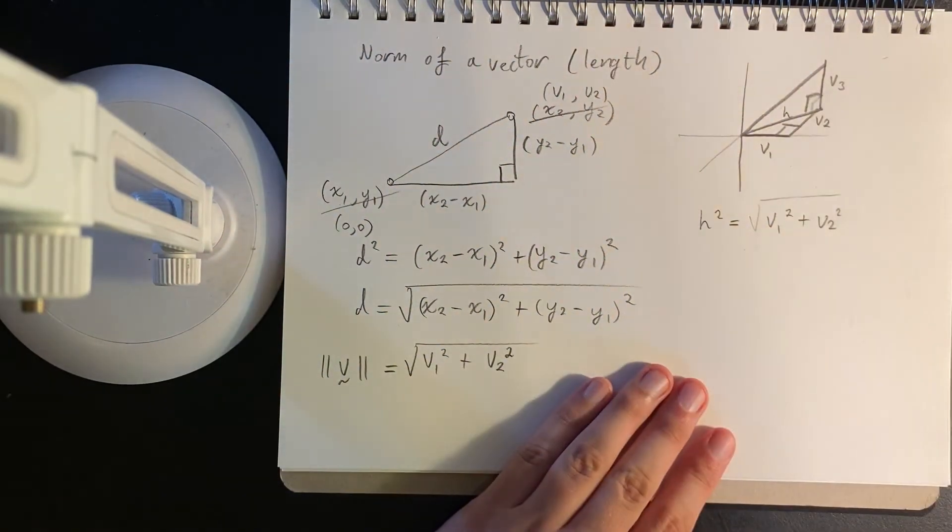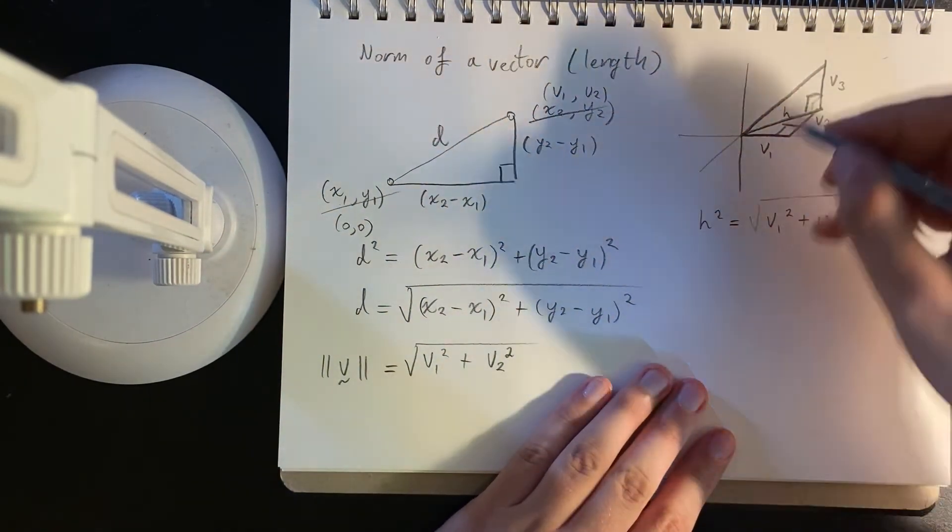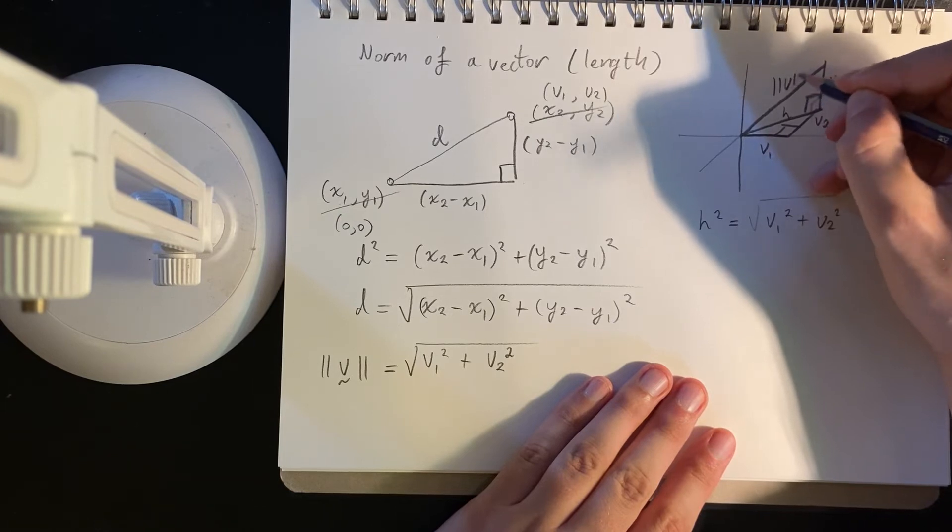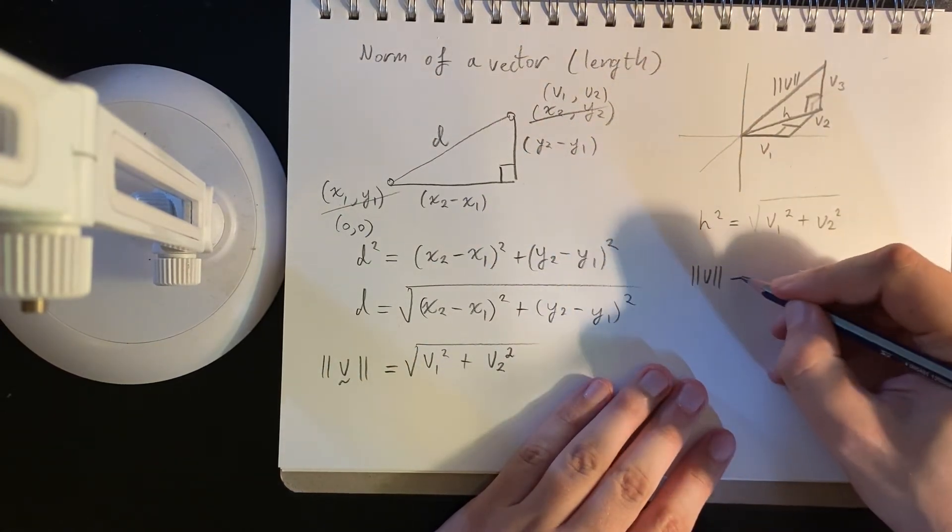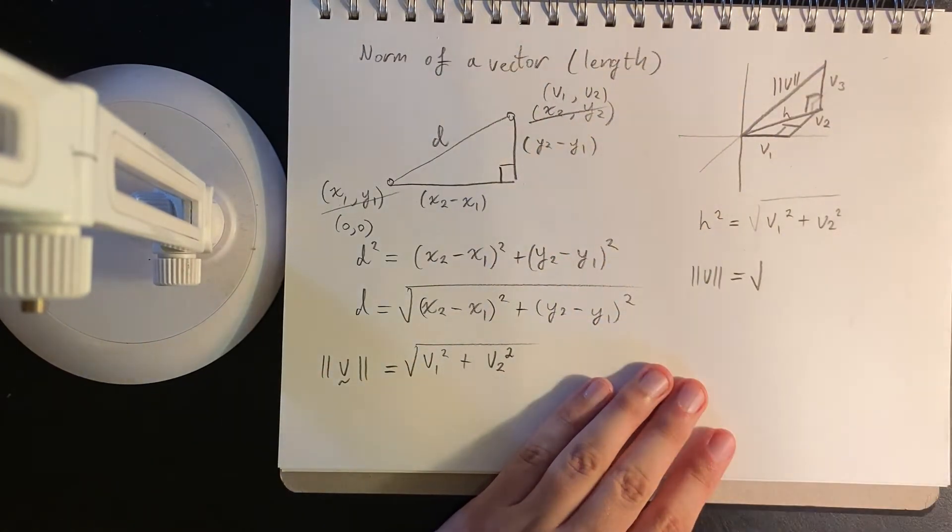And then, well, the length of our vector, Pythagoras' theorem, simply by the fact that we have an orthogonal system,